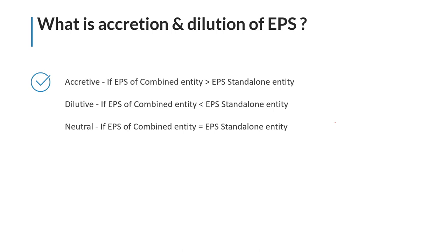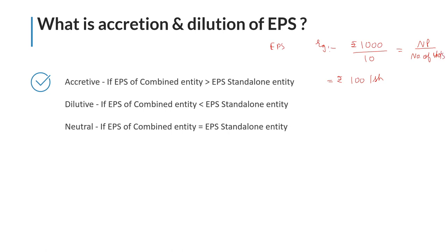Three questions should be answered: what is EPS — earnings per share; what is accretion and dilution of EPS; and why EPS is so important in merger models. Earnings per share is simple: suppose a company earns 1,000 rupees profit with 10 shares outstanding, that's 100 rupees per share. The formula is EPS equals net profit divided by number of shares outstanding.